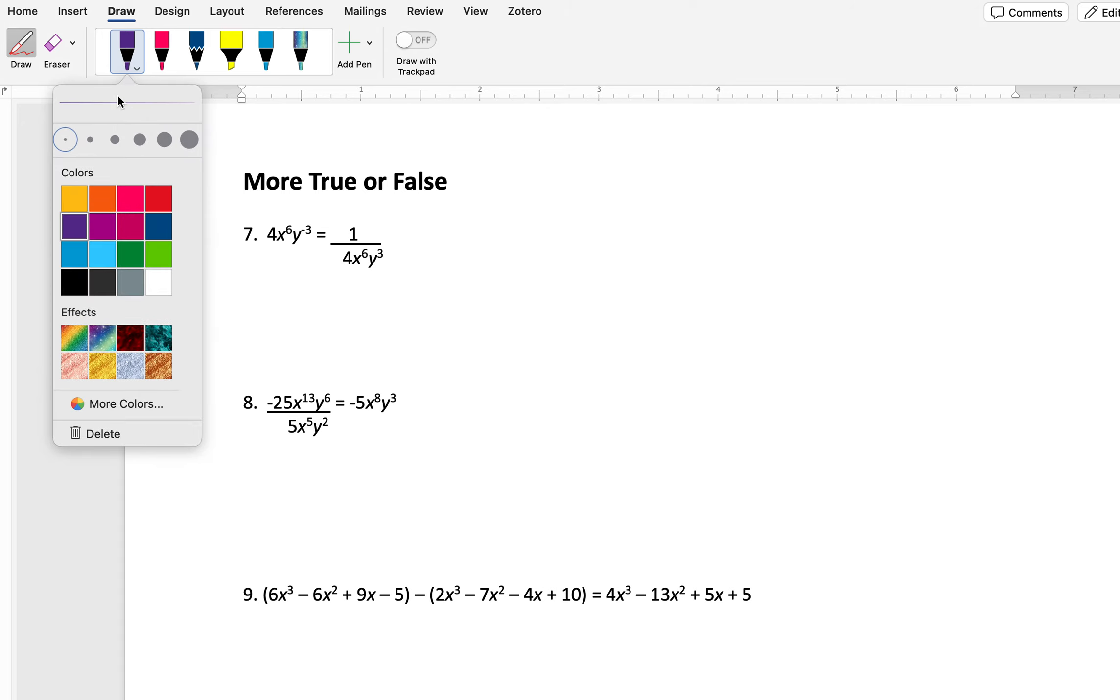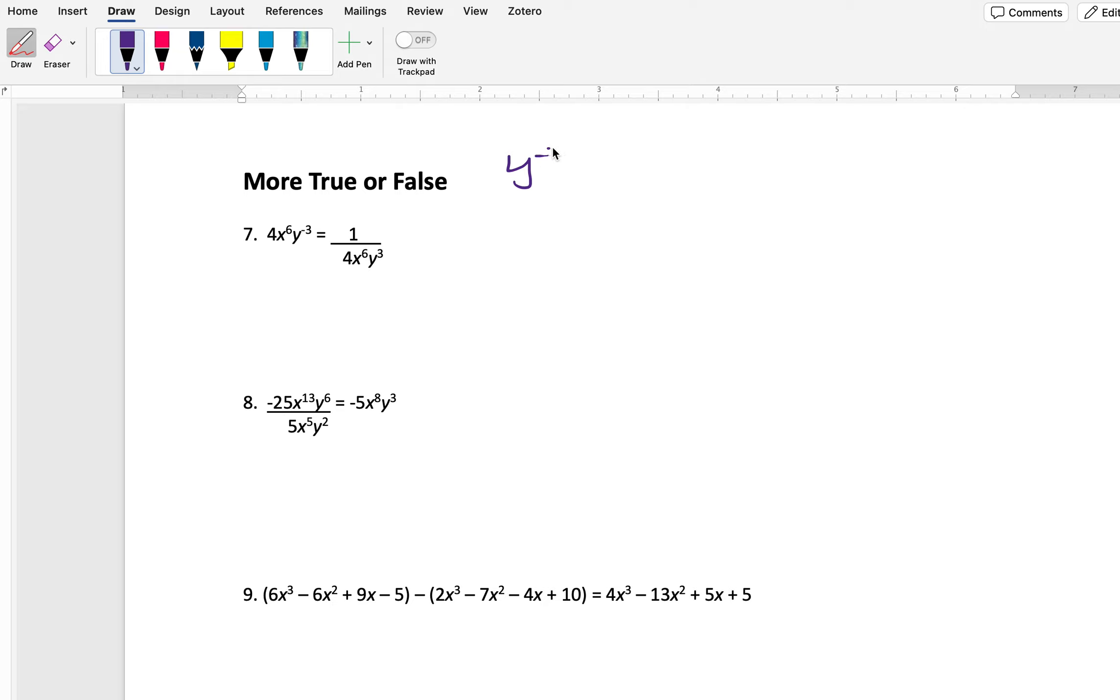What you might remember is that when we have a negative exponent, that can be written as 1 over and make the exponent positive. So if I have y to the negative 3, I can write that as 1 over y to the positive 3. Now, the problem is that negative 3 does not apply to everything here. The negative 3 power is only on the y. 4x to the 6 does not have any negative exponents, so it would not move to the denominator of the fraction. And so this is false.